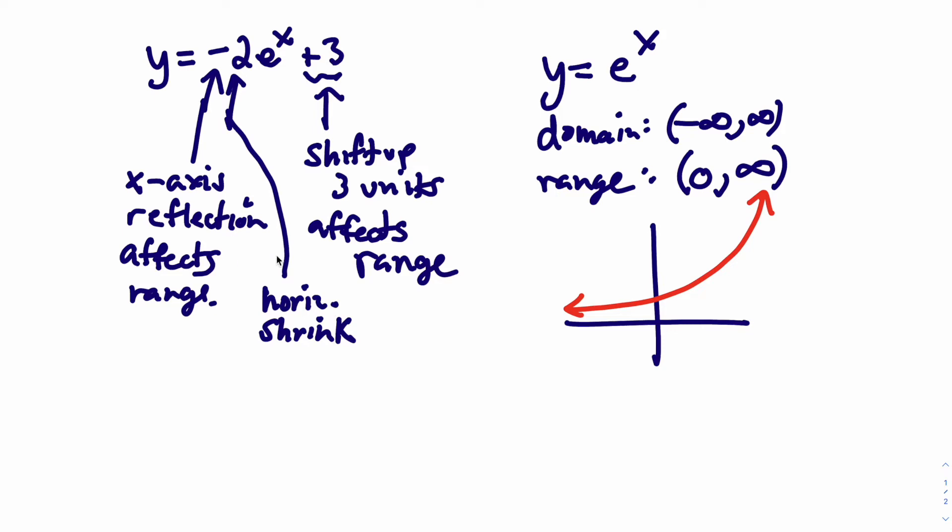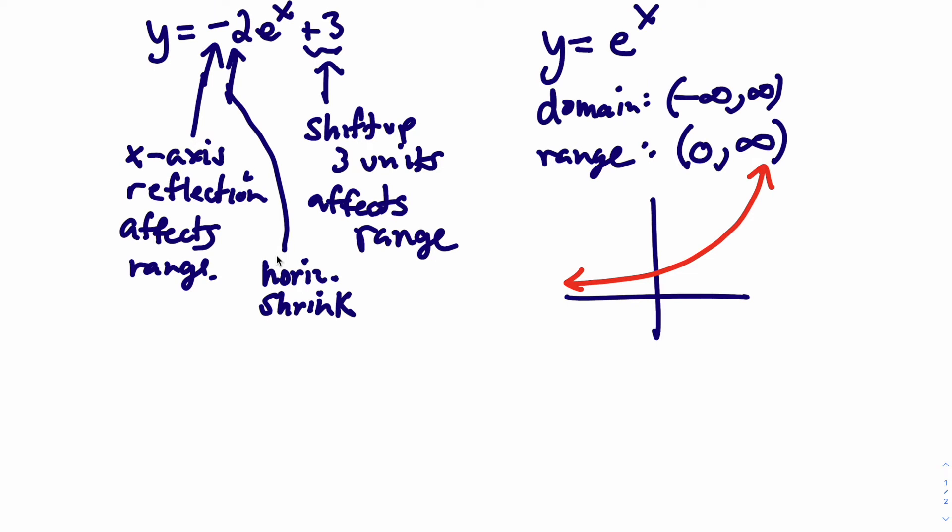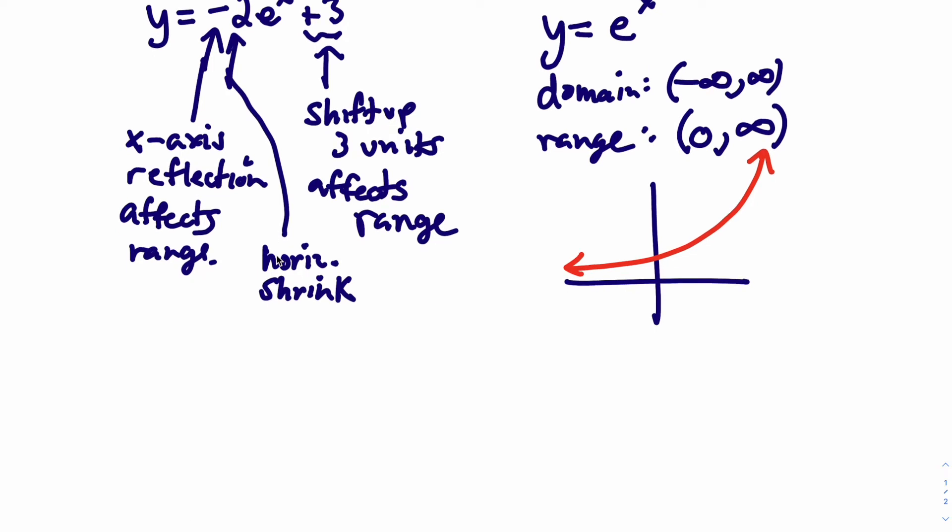And so we put these all together. There's an order about how we do it. The reflection has to happen first, then the stretching and the shifting. Shifting happens last. So we reflect first, and then we shift 3 units upward.